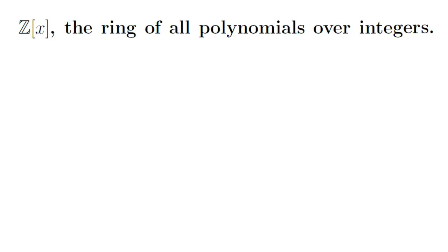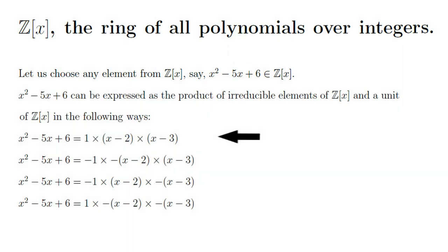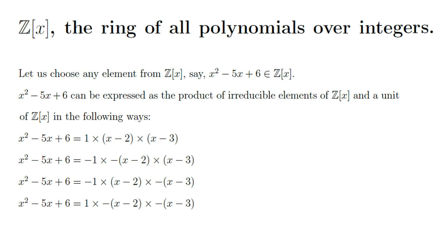We now take the ring of all polynomials over integers. Let's randomly pick the polynomial x squared minus 5x plus 6. The following are four different expressions of x squared minus 5x plus 6 as a product of a unit and irreducible elements. Clearly, the number of elements in all these expressions are the same, and all the non-units are associates of each other. So the ring of all polynomials over Z is also a unique factorization domain.